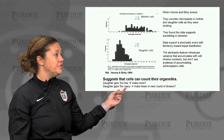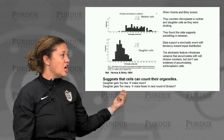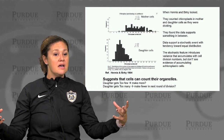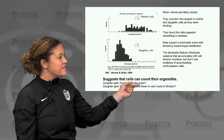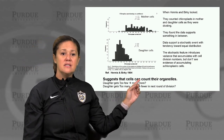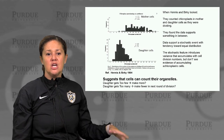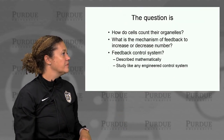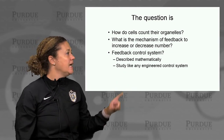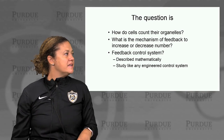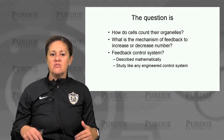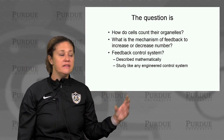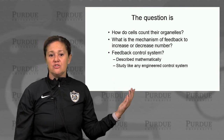If a daughter gets too few organelles, does it make more? If it gets too many, does it make fewer in the next round of division? Or is it regulating segregation? The important point is that it suggests cells can somehow count their organelles — getting feedback on the number of organelles, in this case chloroplasts, present inside the cell. This leads to the fundamental question: how do cells count their organelles, what is the mechanism of feedback, and can we describe this mathematically and study it like an engineered control system?